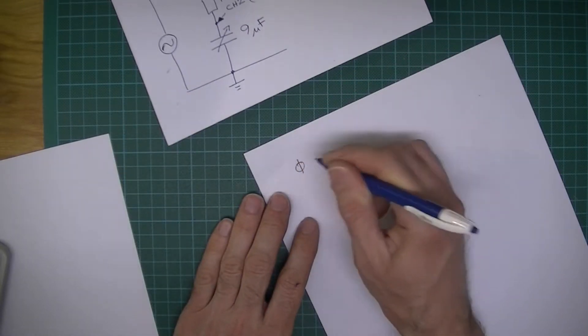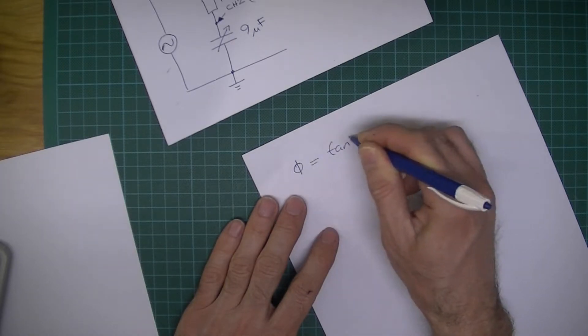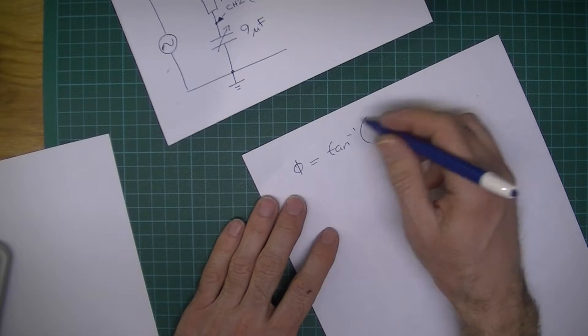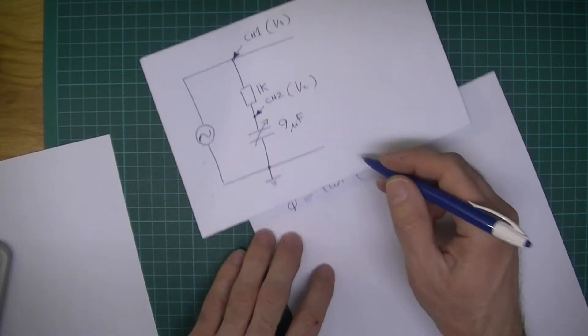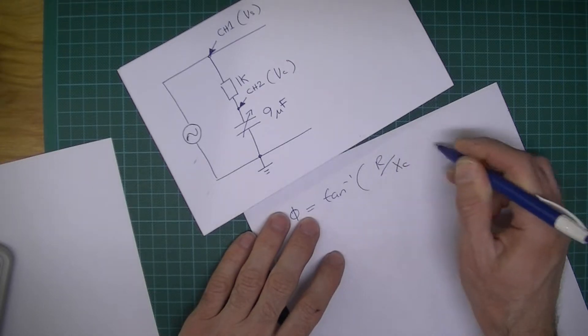Now the phase angle phi is going to be equal to this formula. So the resistor value, this resistor value, over the capacitive reactance.